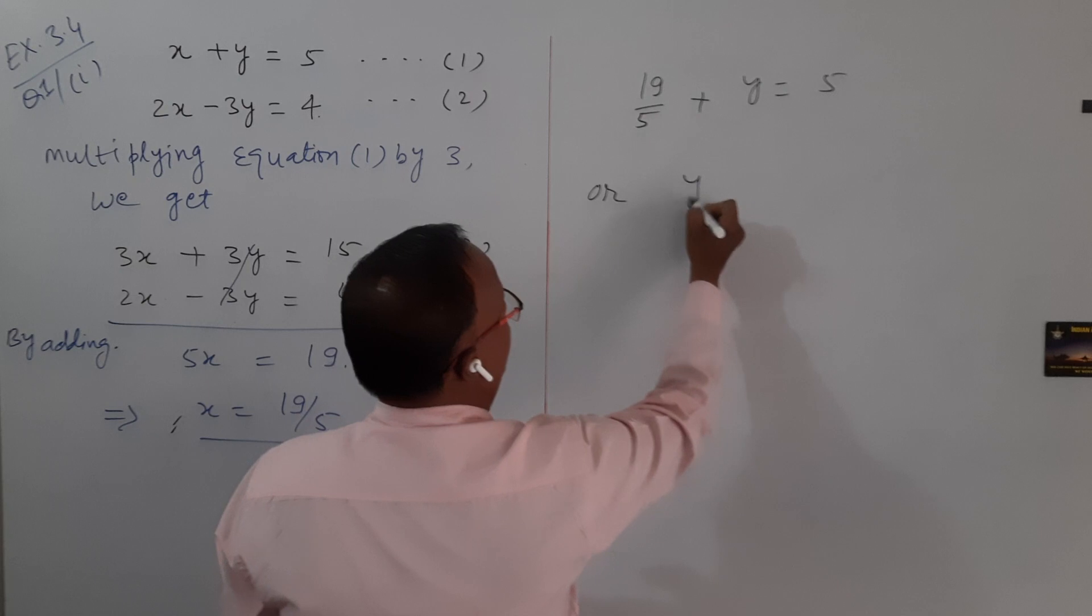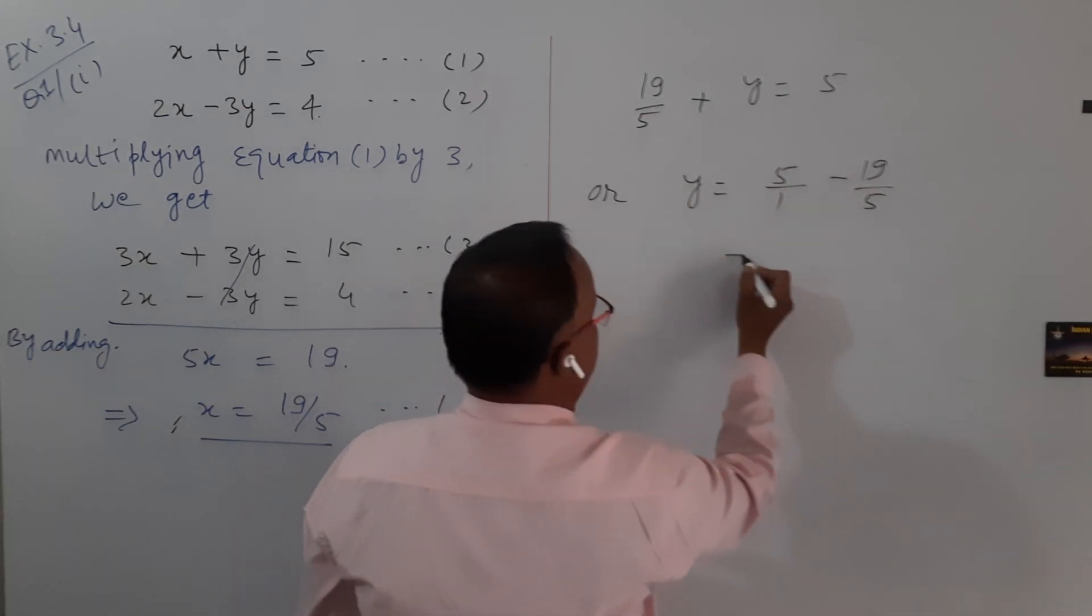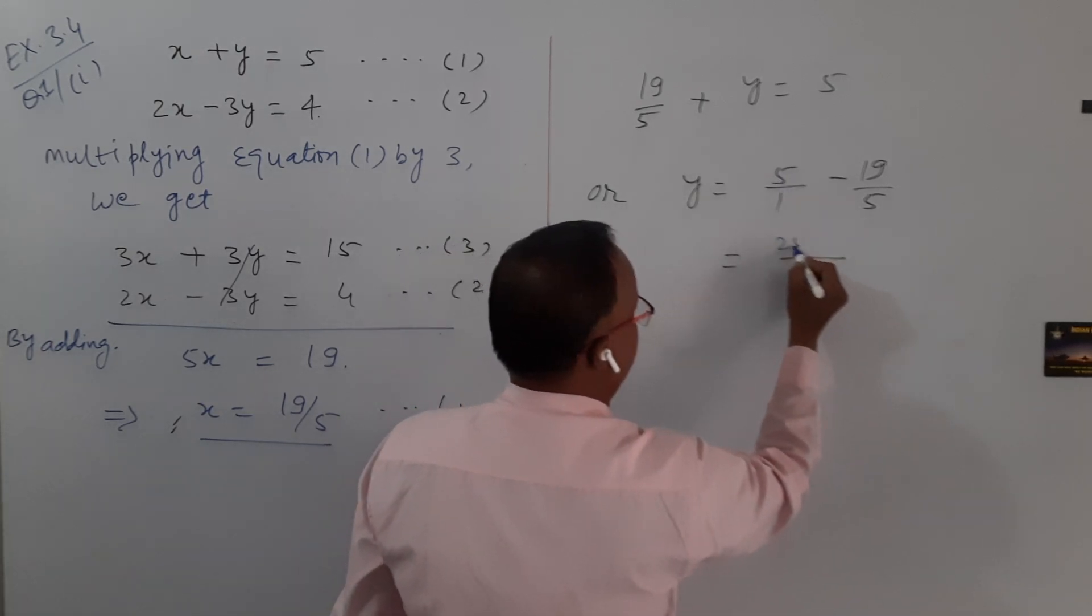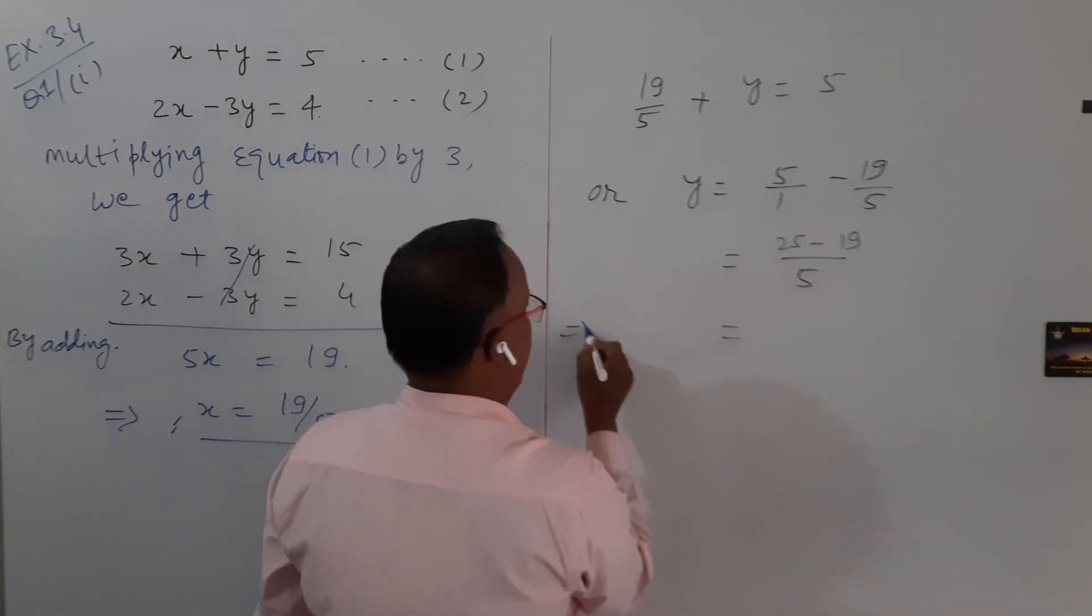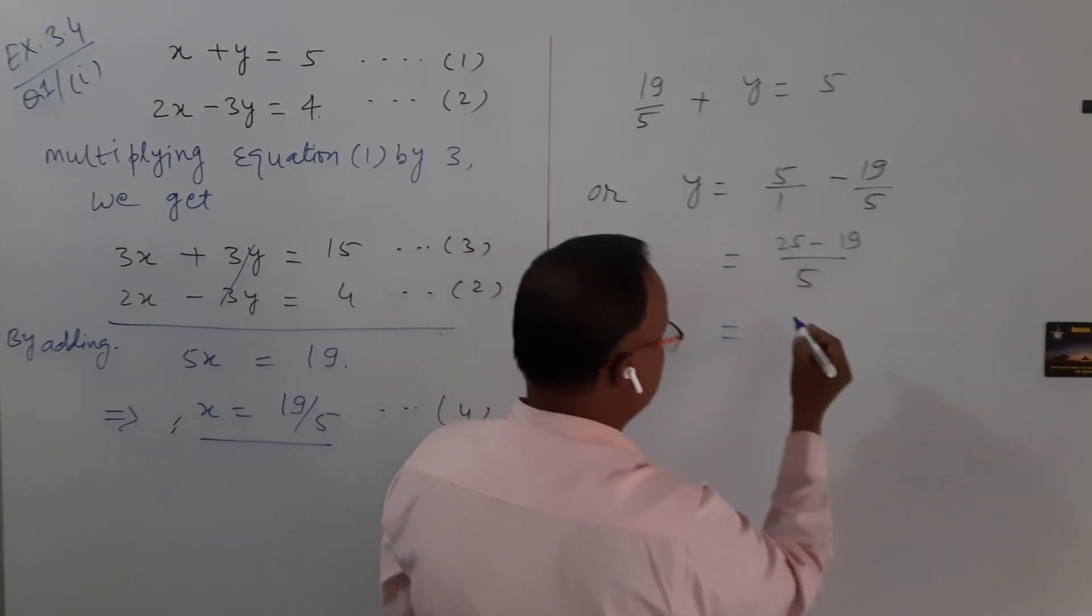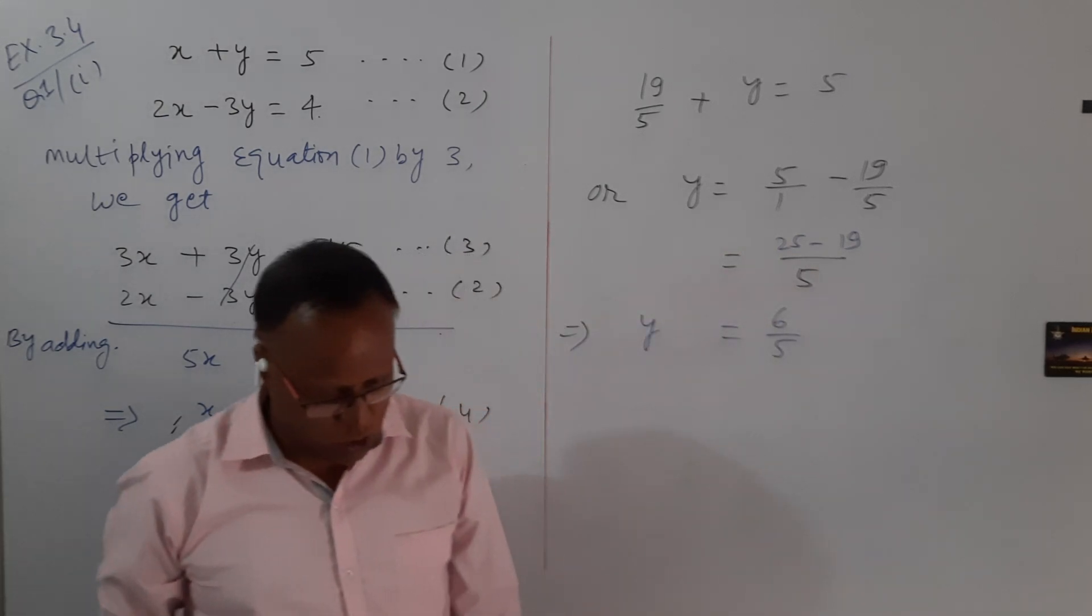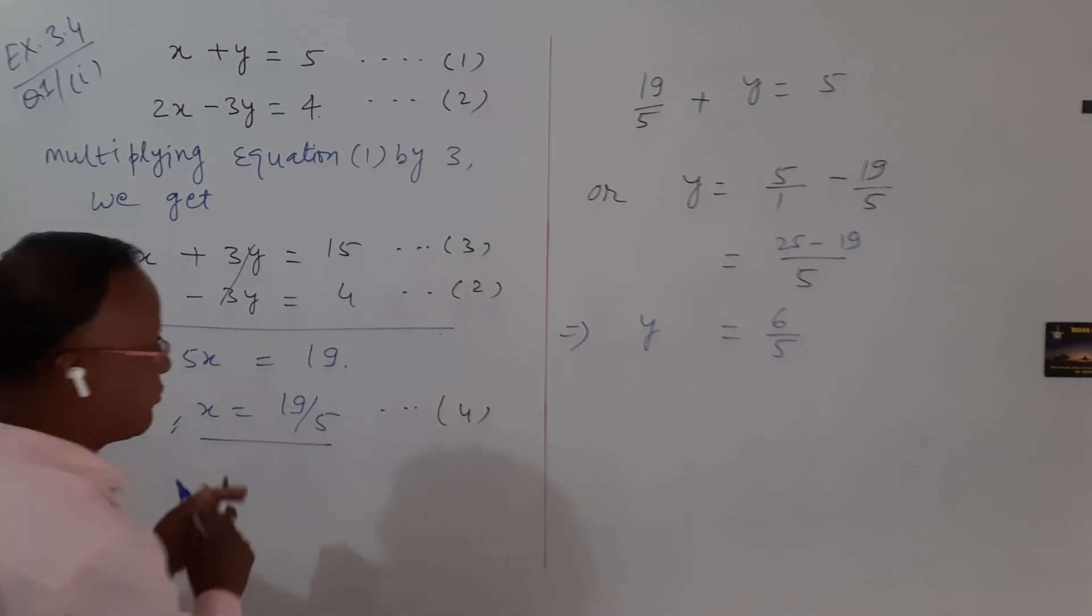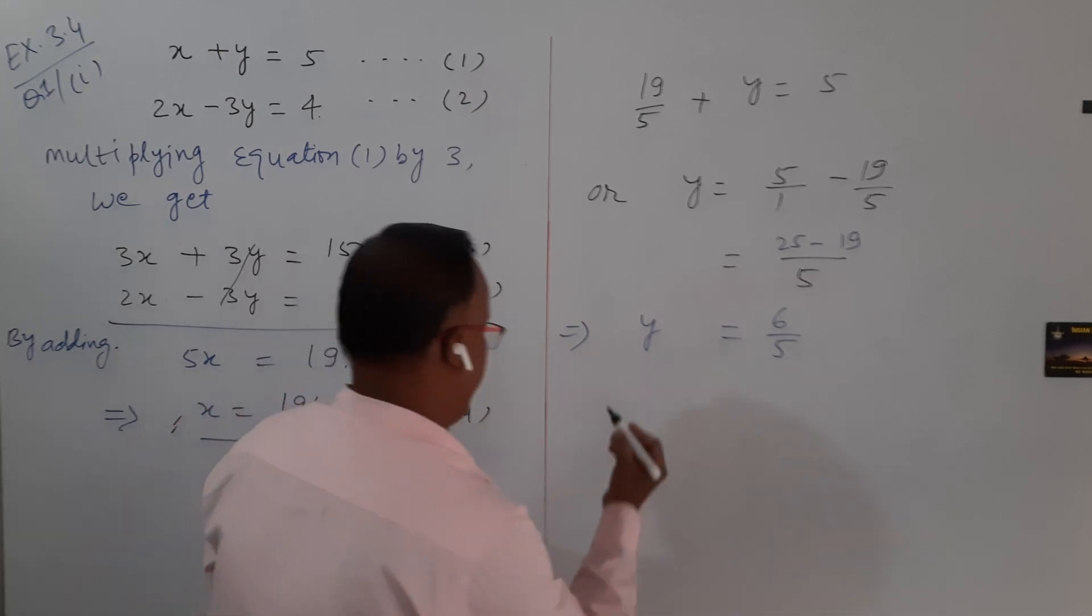So y equals 5 by 1 minus 19 by 5. This is the value of y. The value of x comes out to 19 by 5, and the value of y comes out to 6 upon 5.